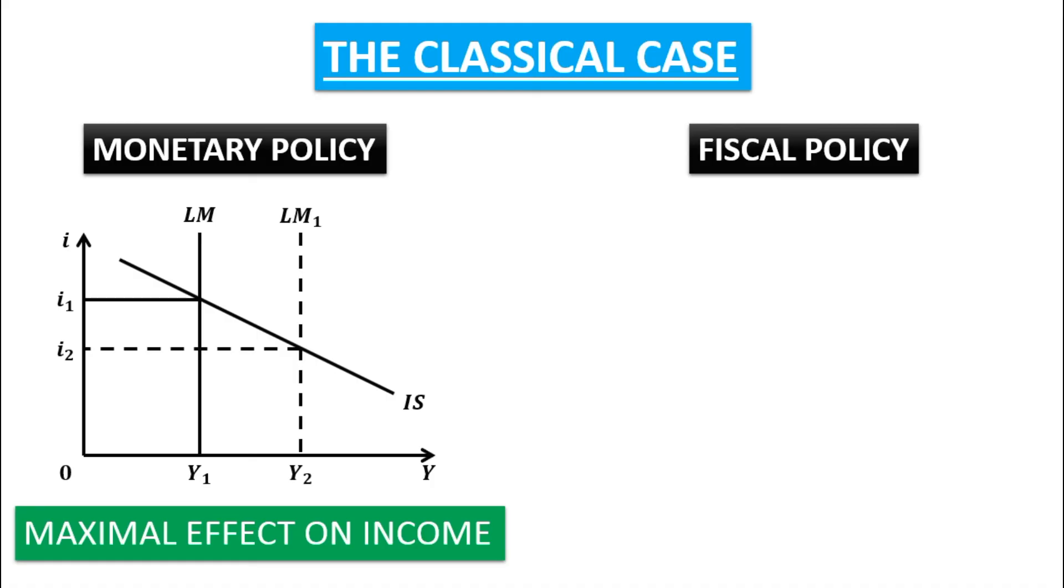Now let us see the case of fiscal policy. Again we have two axes, downward sloping IS schedule, downward sloping LM schedule. Equilibrium interest rate is OI1 and equilibrium output level is OY1. Now in case of expansionary fiscal policy, IS curve will shift towards right.